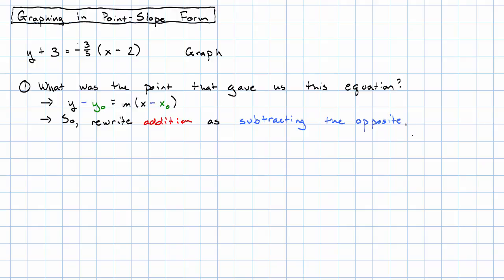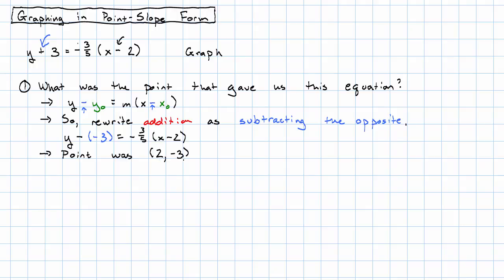So where we see addition, we should rewrite it as subtracting the opposite. Now that's an unusual move for us — usually we're rewriting subtraction as adding the opposite. But in this case, the form we're looking for wants subtraction. In our given equation, we see addition, so instead of y plus 3, we're going to have y minus the opposite of 3. Here we already have subtraction, so we can leave it be. Our given point then was x is 2, y is negative 3.